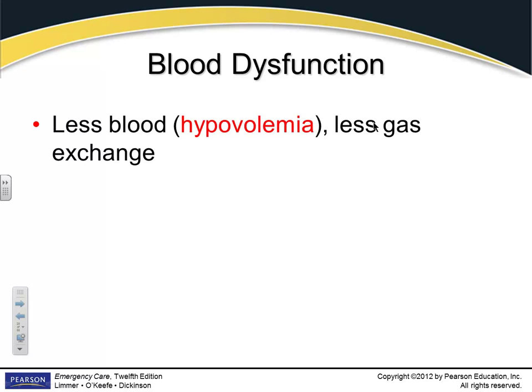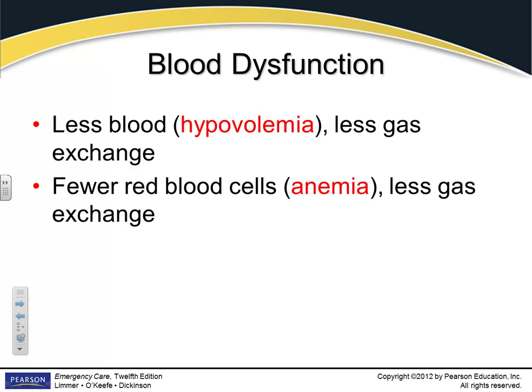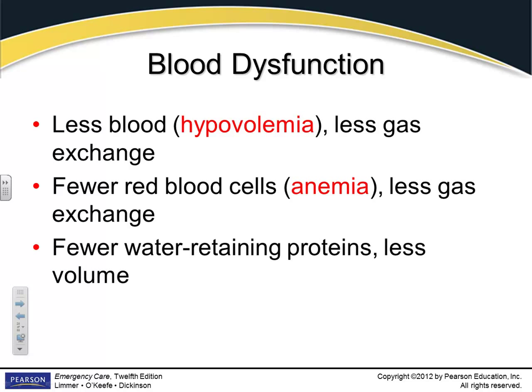Blood dysfunction: if you have a lack of circulating blood volume, we call that hypovolemia. If we don't have much circulating blood volume, we're not going to have much gas exchange because the blood doesn't get around. If we have fewer red blood cells — which can happen for many reasons including hypovolemia — we can't carry enough oxygen. If we have less water-retaining proteins, we have less fluid volume, which also makes us hypovolemic.